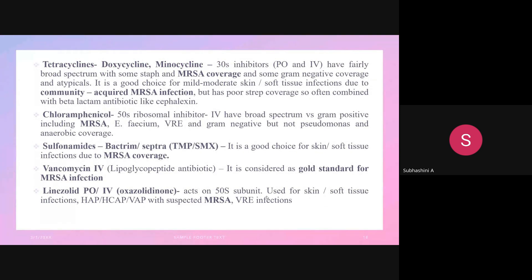Tetracyclines — doxycycline and minocycline — are 30S inhibitors with good MRSA coverage. They are broad-spectrum, covering both gram-positive and gram-negative organisms, and are a good choice for skin and soft tissue infections as well as community-acquired MRSA infections.